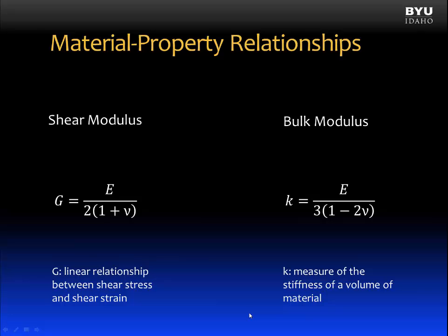A couple more material property relationships to discuss. First, the shear modulus, which shows up in Hooke's Law for shear stress and strain. Using the generalized Hooke's Law equations, we can derive an expression showing that the shear modulus of a material is related to the modulus of elasticity and Poisson's ratio. This is a very useful relationship because we can find the shear modulus of a material knowing just the elastic modulus and Poisson's ratio.